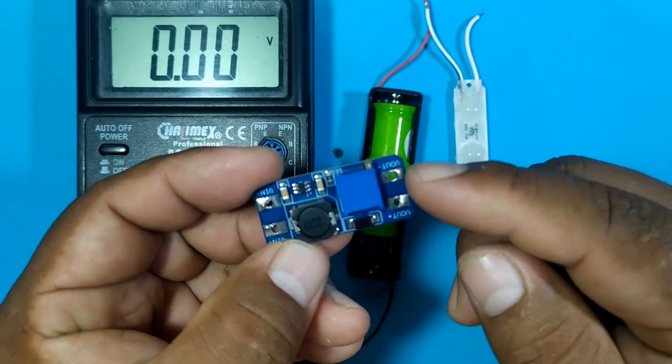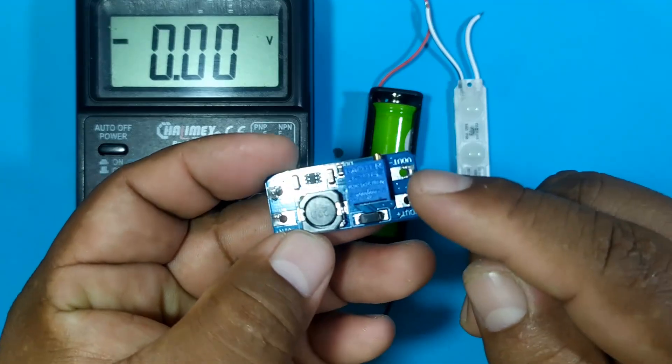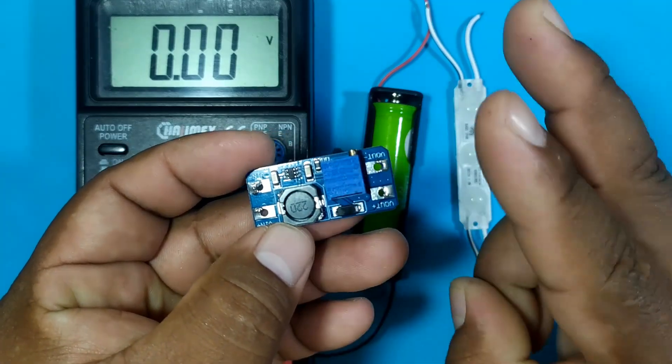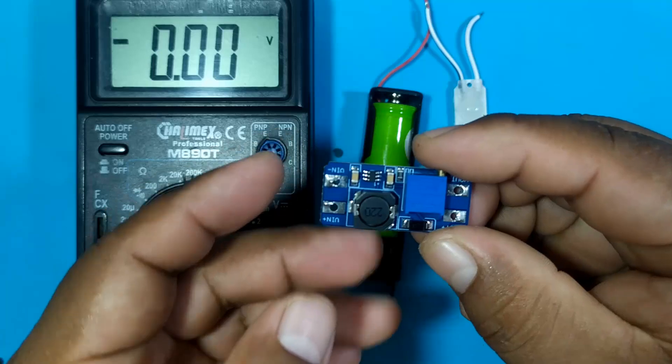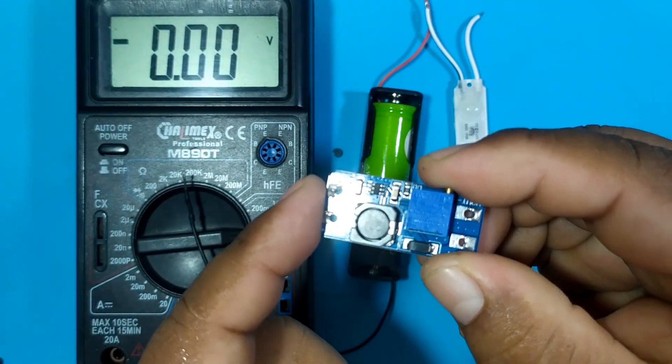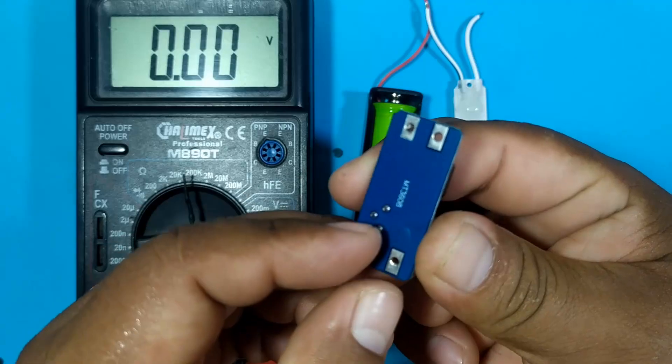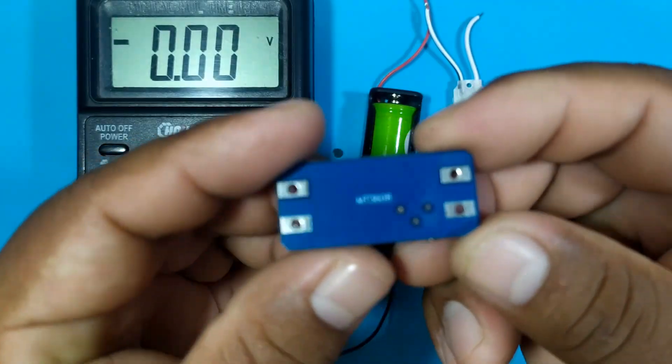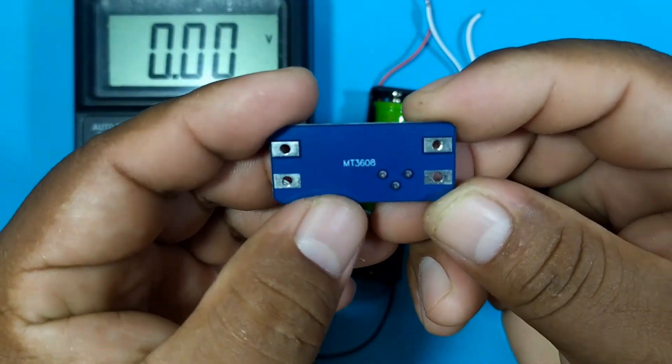This voltage booster can deliver up to 28 volts at its output at 2 amps. And it can work with voltages from the 2 input volts. You can buy it as an MT3608 module.